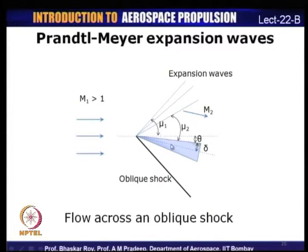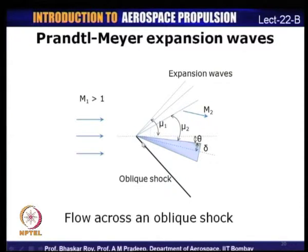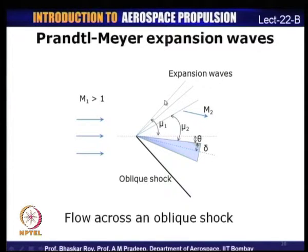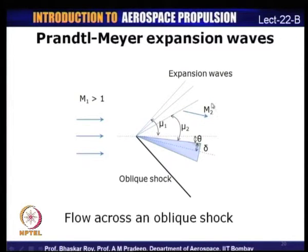Prandtl-Meyer expansion waves represent an infinite number of Mach waves which form when we have a wedge at a certain angle of attack or at any expansion corner. The Mach number downstream of the expansion fan increases — unlike a shock wave where the Mach number decreases. Pressure, temperature, and density also decrease, which is the exact opposite of what happens across a shock wave. On the compression corner we continue to have an oblique shock, whereas on the expansion corner there is an increase in area and it becomes an expansion flow through the presence of these expansion waves.